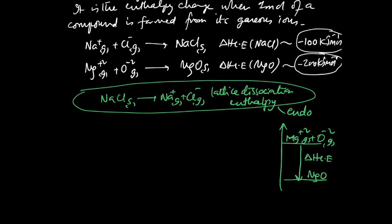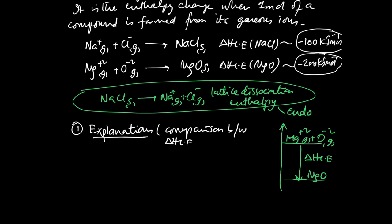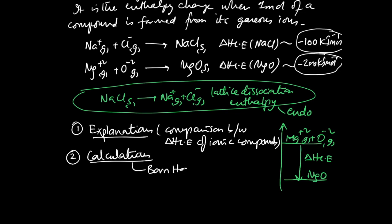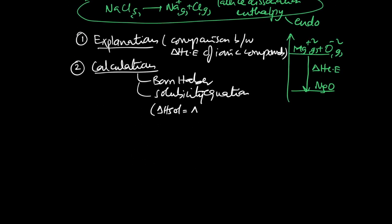In order to move on further, A-level students learning the lattice energy concept should know two things: explanations — comparison between lattice energies of ionic compounds — and calculations. For calculations, we have the Born-Haber cycle, which is famous but very easy, and the solubility equation, which gives us: enthalpy of solution = enthalpy of hydration − enthalpy of lattice energy. By the way, Born-Haber and the solubility equation are both fine examples of Hess's law.